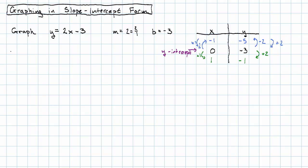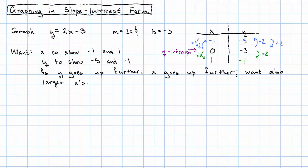We want the x-axis to show at least negative 1 and 1. The y-axis to show negative 5 and negative 1. Well, the y-axis has to go at least up to 0. And as y increases, x also increases. So we want also some larger x's. So maybe a set of axes that look like this will look nice.